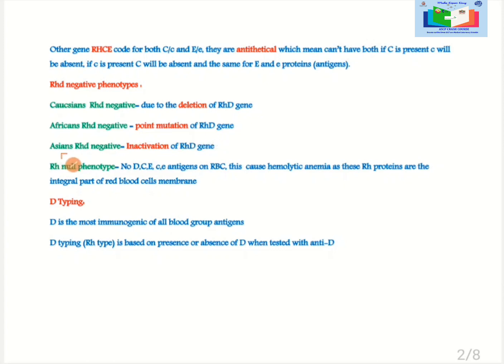RH Null phenotype: There is no D, C, E, small c and small e antigens on red blood cell membrane. This causes hemolytic anemia as these RH proteins or antigens are the integral part of the red cell membrane.